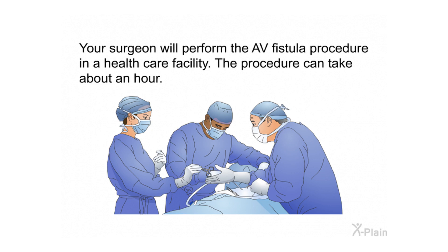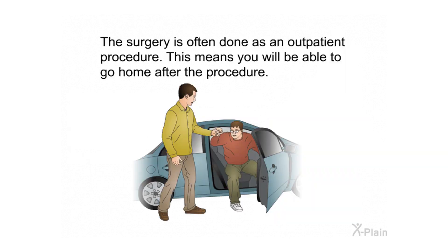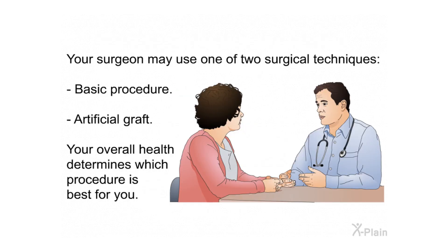Your surgeon will perform the AV fistula procedure in a health care facility. The procedure can take about an hour. You will receive local anesthesia to keep you awake but pain-free; general anesthesia may be used if you need to be asleep during the procedure. The surgery is often done as an outpatient procedure, meaning you will be able to go home afterward. Your surgeon may use one of two surgical techniques: the basic procedure or an artificial graft. Your overall health determines which procedure is best for you.